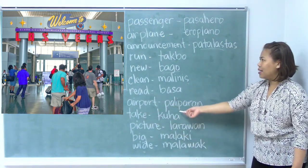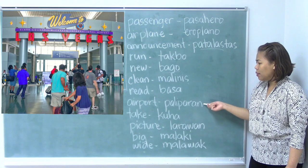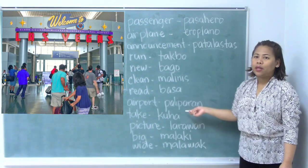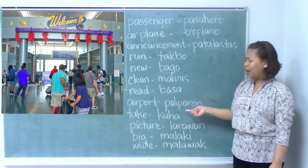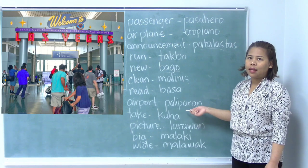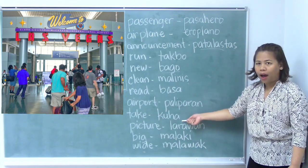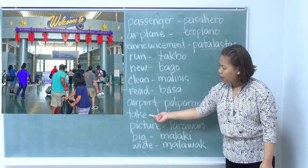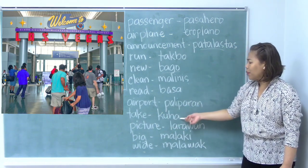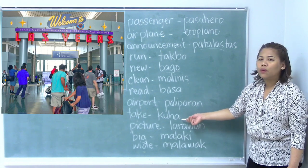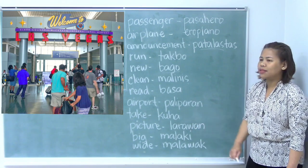Airport is paliparan. I already mentioned this one earlier. But actually, you don't have to remember this translation, because we really do not use paliparan when we mean airport — we say airport. Paliparan is only used in written Filipino or formal Filipino. Take is kuha. Future: kukuha. Present: kumukuha. And past is kumuha. That's the conjugation.